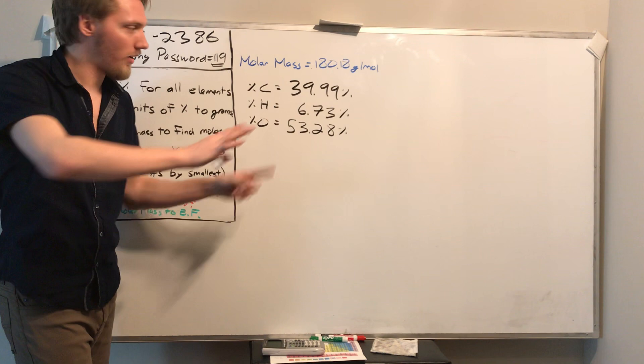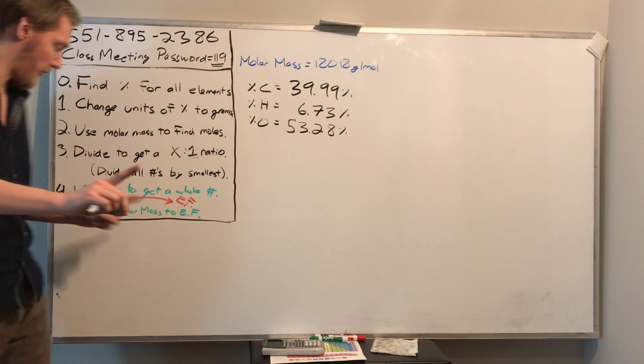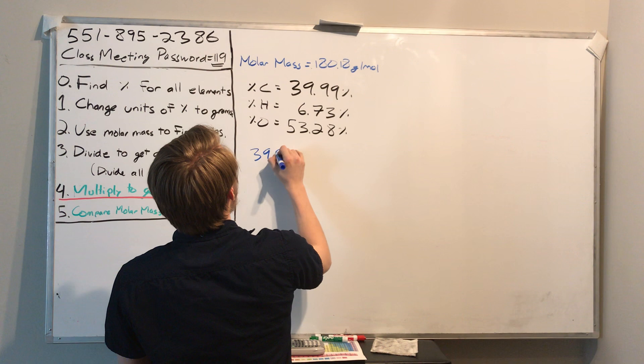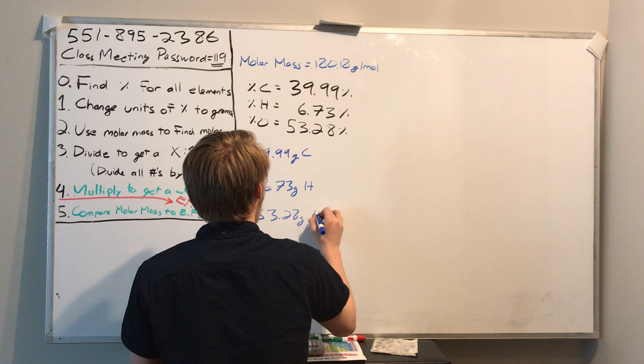So if you want, take a second and work backwards. Take this percent composition, find what we now know to be the empirical formula. I'm actually not going to pause for very long, but you can do that if you want. Find the empirical formula, steps one through four. I'm going to fly through it now. So you should have 39.99 grams now of carbon, 6.73 grams of hydrogen, 53.28 grams of oxygen.